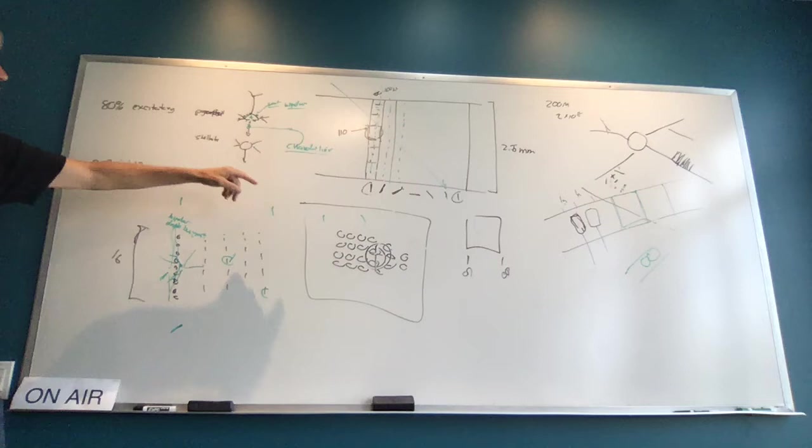Right now our temporal memory model has it as if we have one inhibitory cell per mini-column, connected to all cells, able to inhibit any cell. Is it unreasonable to have a model with three or four inhibitory cells per mini-column with different receptive fields, so each inhibitory cell is connected to a subsection of the mini-column? It's reasonable, but I don't have any evidence for that. That would suggest subsets within the mini-column respond to different things. But is that conceptually any different from just having four mini-columns — splitting one into four different ones?